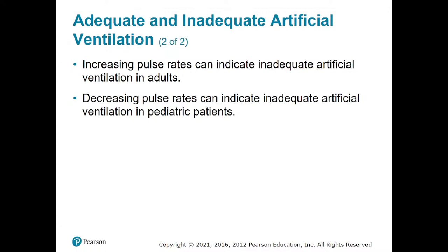In pediatric patients, a decreasing pulse rate can indicate inadequate artificial ventilation — meaning we're giving far too much and putting a lot of pressure on their system. Our pediatric patients are far more likely to require artificial ventilation, and to start having their pulse rate decrease because we're ventilating far too aggressively: too much volume, too fast. In adults, an increase in pulse rate while ventilating artificially can indicate inadequate artificial ventilation. With an adult, an increasing pulse rate means you are overbag-ventilating by a lot.